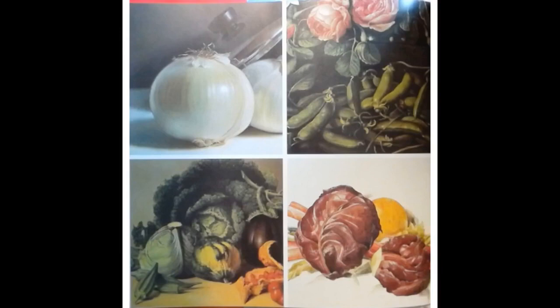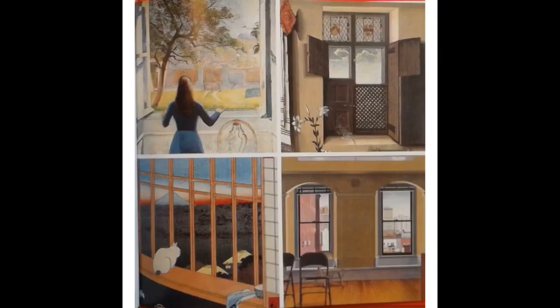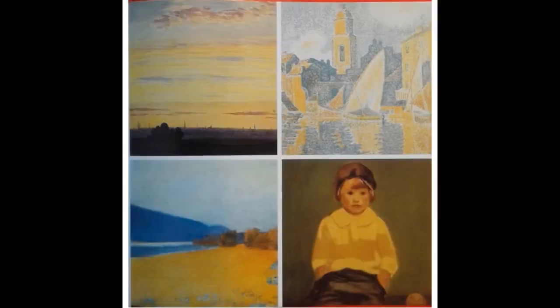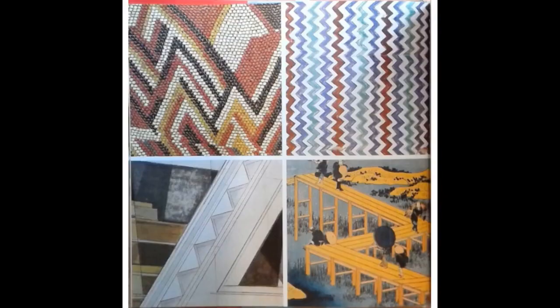V is for Vegetable. W is for Window. X is for X. Y is for Yellow. Z is for Zig Zag.